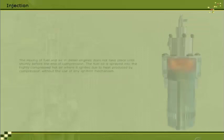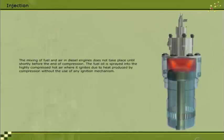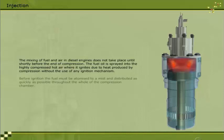The mixing of fuel and air in diesel engines does not take place until shortly before the end of compression. The fuel oil is sprayed into the highly compressed hot air, where it ignites due to heat produced by compression, without the use of any ignition mechanism. Before ignition, the fuel must be atomised to a mist and distributed as quickly as possible throughout the whole of the compression chamber.